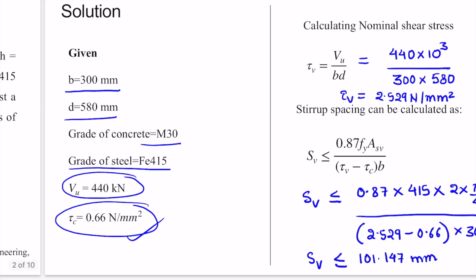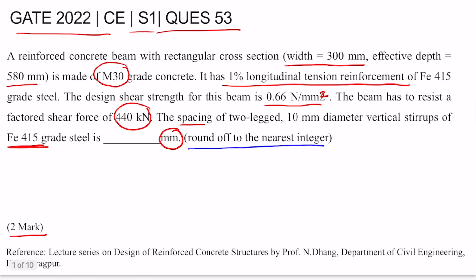This is the value of S_v we got by using the formula, but since we need to give the value by rounding it off to the nearest integer, our final answer will be 101 mm.